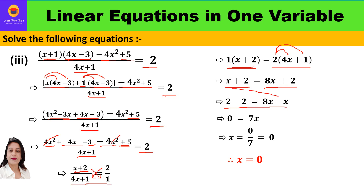x comes to the right as minus x, and 2 goes to the right as minus 2. So 2 minus 2 is 0, and 8x minus x is 7x. Therefore x equals 0/7, which equals 0. The value of x is 0.